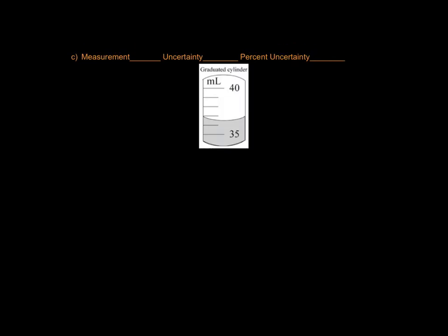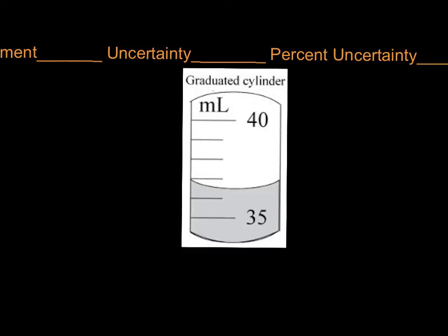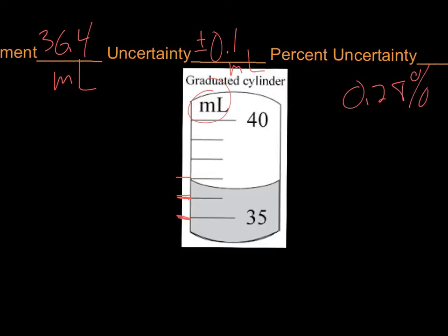The last measurement here, we're in a graduated cylinder that's measuring in milliliters. We have markings. This time we don't have the tenths markings. It's in between 36 and 37. So we can record that as 36.4 or 36.5 milliliters. Uncertainty here is plus or minus 0.1 milliliters. And the percent uncertainty is 0.282%.